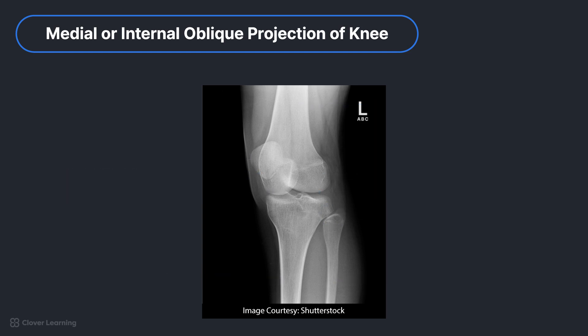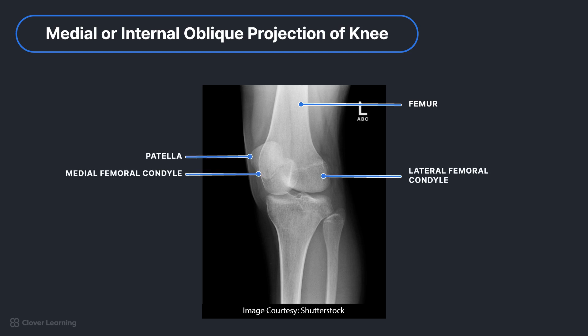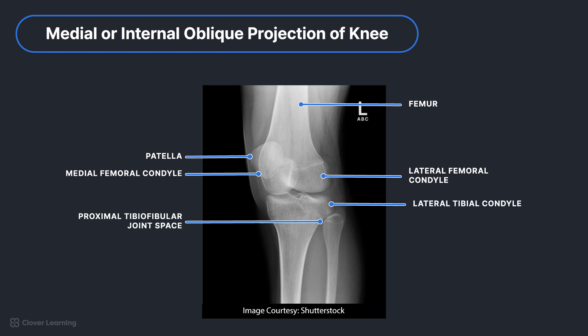Let's identify the anatomy from superior to inferior: distal femur, patella, medial femoral condyle, lateral femoral condyle, lateral condyle of the tibia, proximal tibiofibular joint, head of the fibula, neck of the fibula, and proximal tibia.